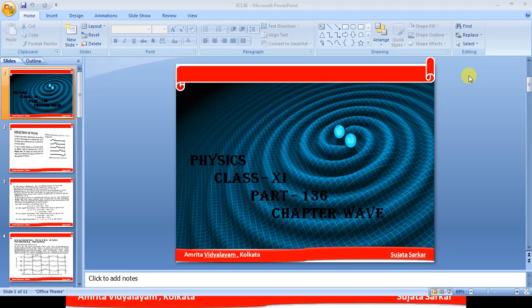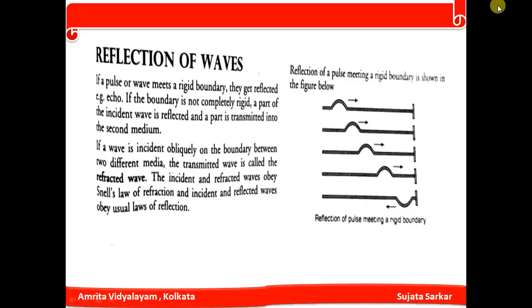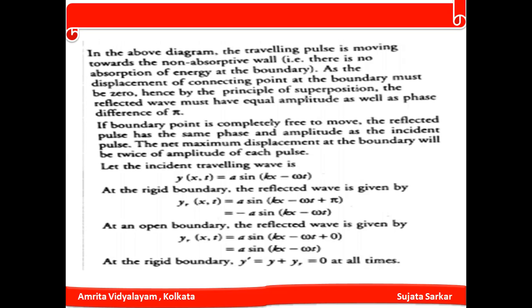Reflection of waves: when a pulse or wave meets a rigid boundary, it gets reflected — like an echo. A part of the incident wave is reflected and a part is transmitted to the second medium. The incident wave obliquely striking the boundary gives a reflected wave and a refracted wave. The incident and refracted waves obey Snell's law of refraction, and the incident and reflected waves obey the usual law of reflection.